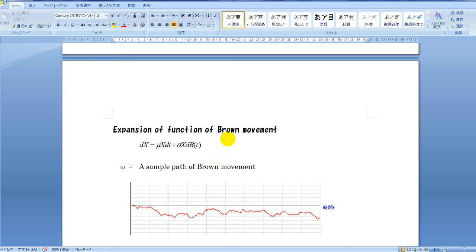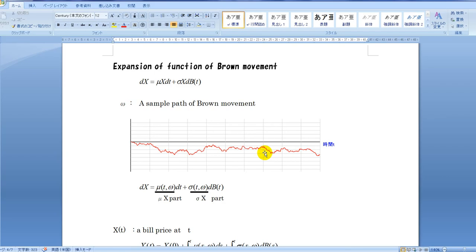Expansion of function of Brown movement. A bill change is described like this. We assume omega as a sample path of Brown movement. And the change along the omega is treated. Then dX is expressed like this. Mu X is a part that doesn't depend on Brown movement. And sigma X is a part that depends on Brown movement.